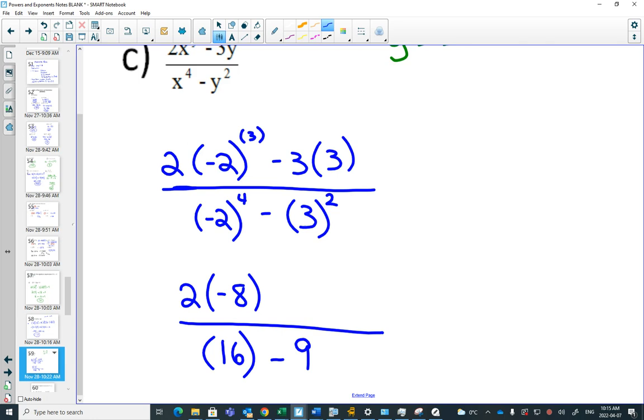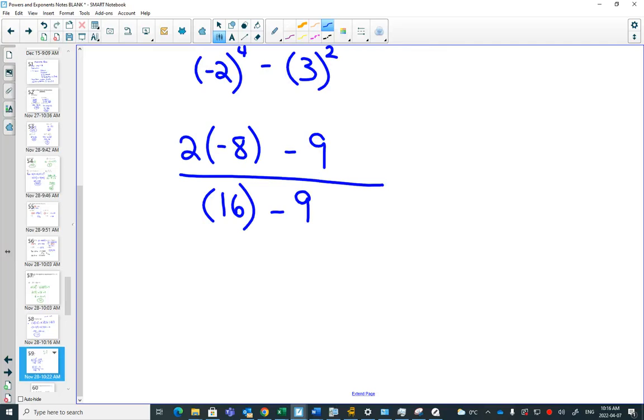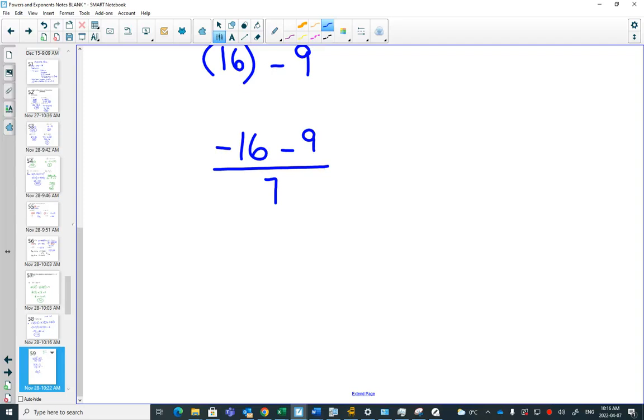So if you wanted to, you could do 3 times 3 and write that as 9. You could have left it, because our next stage is we have to multiply anyway. So here we have 2 times negative 8. That's going to be negative 16. Minus 9. And now that I'm done the multiplying, if you wanted to, you could subtract on the bottom. What's 16 minus 9? 7. And then negative 16 minus 9? Minus 25 over 7. Crushed that one?